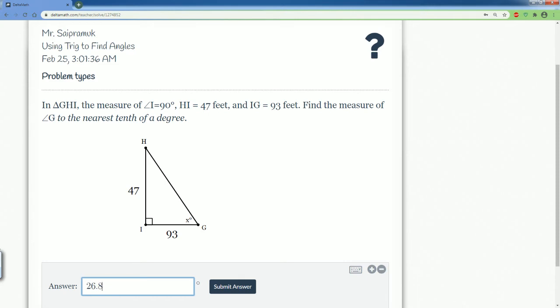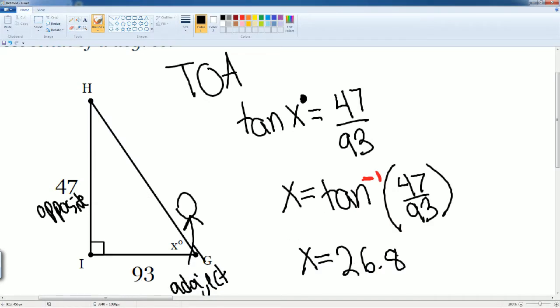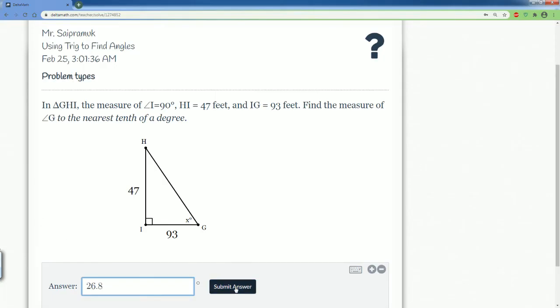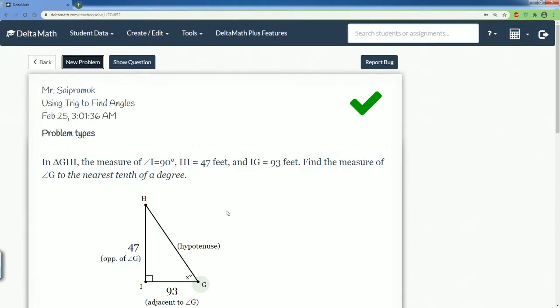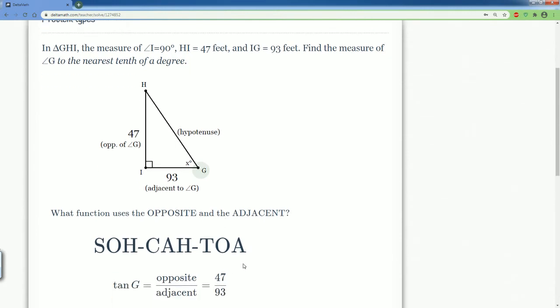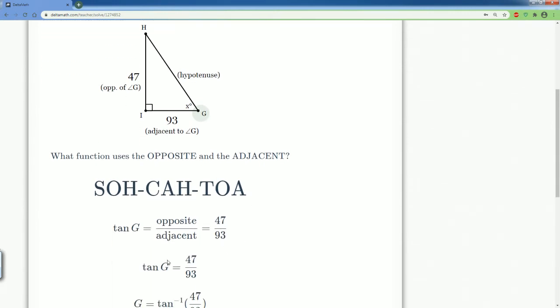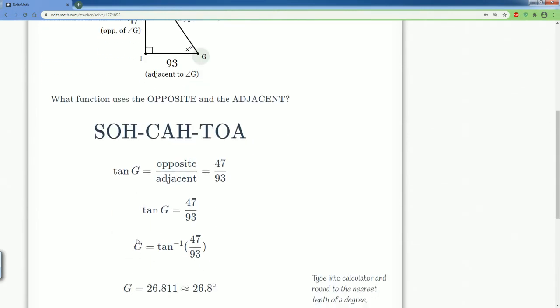Let me just double check our work one more time. 26.8 opposite over adjacent and we use the inverse. So that should be correct. And we did it correctly. Remember we use the same tan, but in the end we use the inverse to solve for the angle.